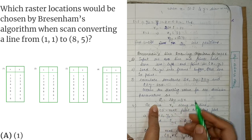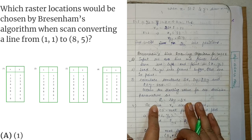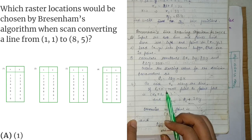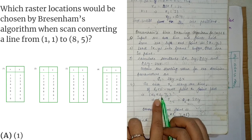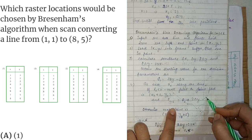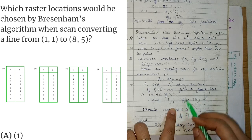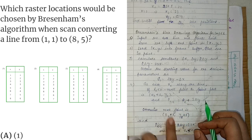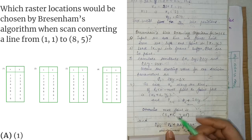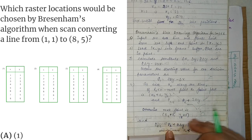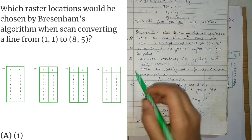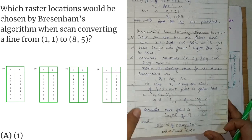The initial decision parameter p0 equals 2*delta y minus delta x. Next, if the decision parameter p is less than zero, then the x coordinate is incremented by 1 and y stays as it is, and the next decision parameter p(k+1) equals p(k) plus 2*delta y. Otherwise, if p is greater than zero, then both x and y are incremented by 1, and the decision parameter becomes p(k) plus 2*delta y minus 2*delta x.